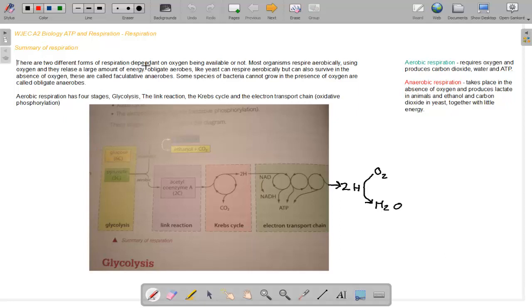There are two different forms of respiration depending on oxygen being available or not. Most organisms respire aerobically using oxygen and they release a large amount of energy. Obligate aerobes like yeast can respire aerobically but can also survive in the absence of oxygen, which is why you can keep yeast in packets for ages. These are called facultative anaerobes. Some species of bacteria cannot grow in the presence of oxygen and these are called obligate anaerobes.